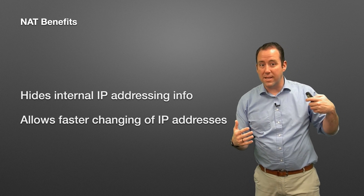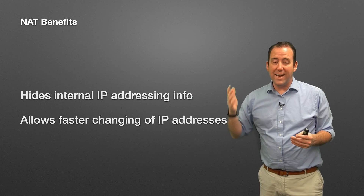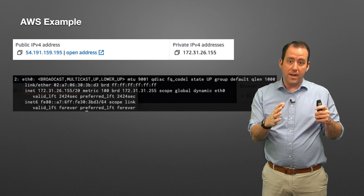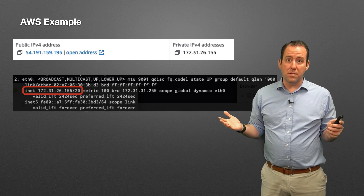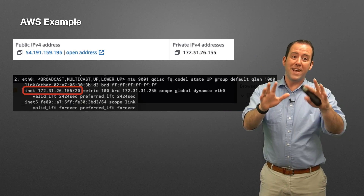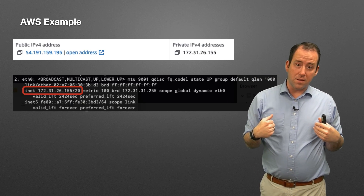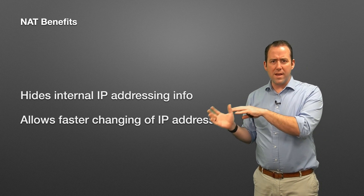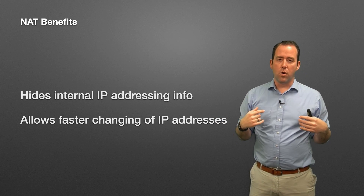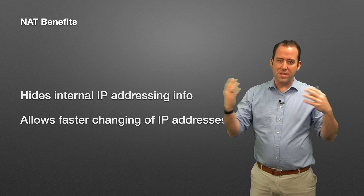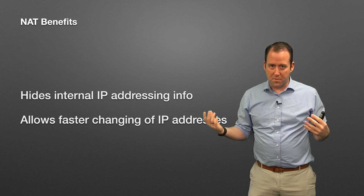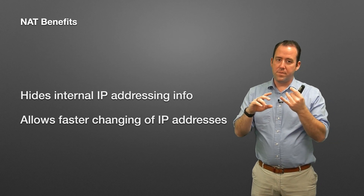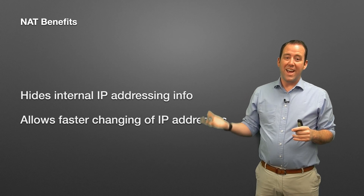Why would we do it? It does a bunch of things for us. One thing it does is hide internal IP addressing information. Inside our network we have that 172.31 address - nobody outside the network needs to know that. That's private information, so we can keep the internal structure of our network - the way things connect inside - a secret from the outside. If everything had a public address, all your network information would be visible and knowable by outsiders through things like port scans.